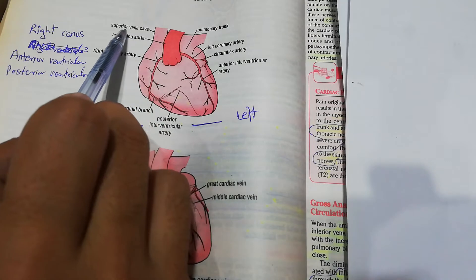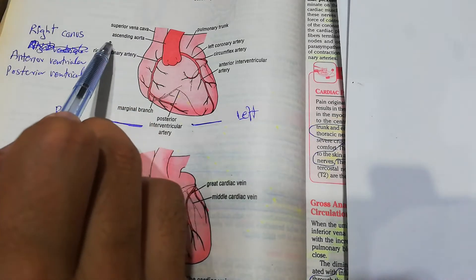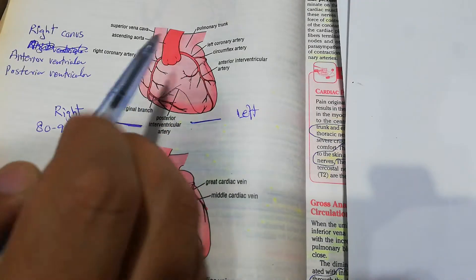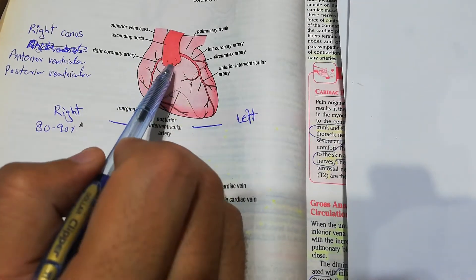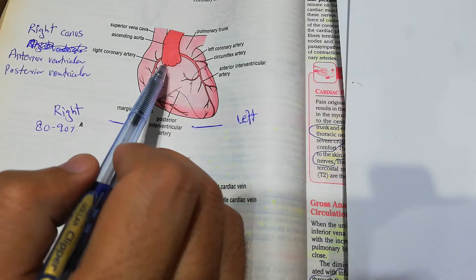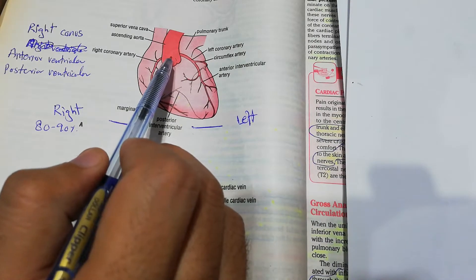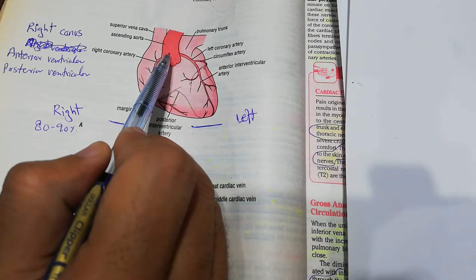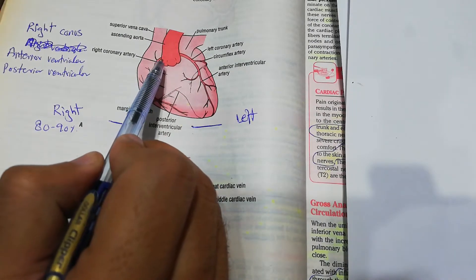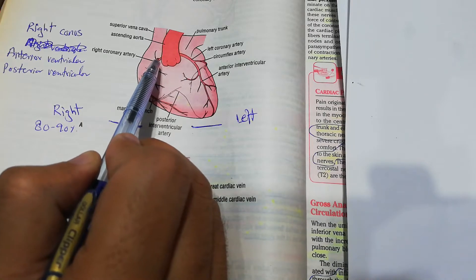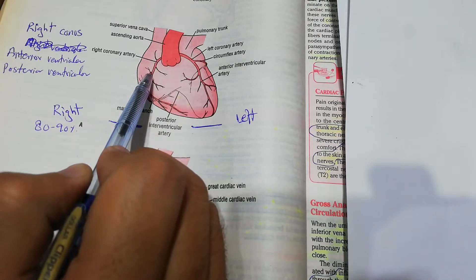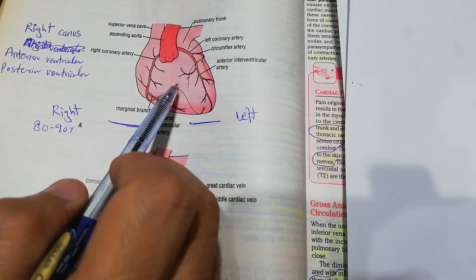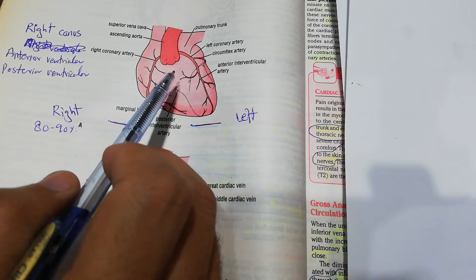Here we have the superior vena cava and the ascending aorta. The aorta is taking oxygenated blood to the human body. As soon as the aorta arises from the left ventricle, the coronary arteries also arise from the aorta, from the base of the aorta. There are two main coronary blood vessels.